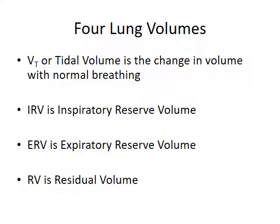Then we have our residual volume. If we bring the diaphragm as high as it can go and collapse the ribs as much as we can, we're still going to have volume inside that rib cage — they can only go so flat. So there's always going to be air in the lungs. The difference between our collapsed lung and our completely open lung goes through our expiratory reserve, tidal volume, and inspiratory reserve, adding up to what's called our total lung capacity.